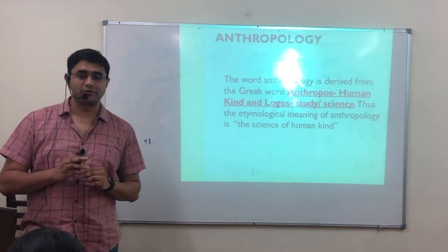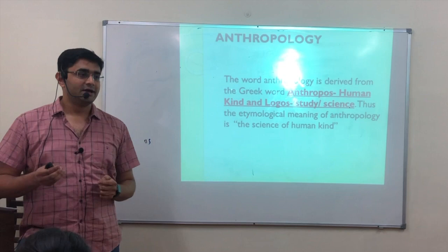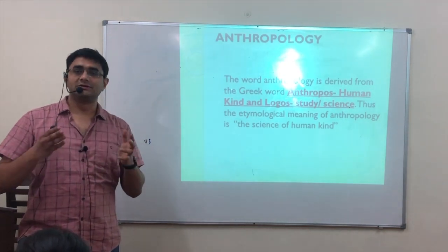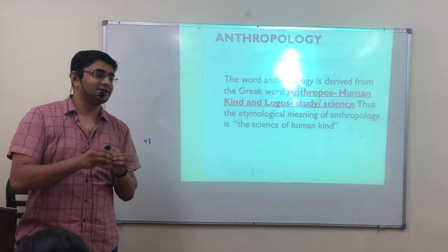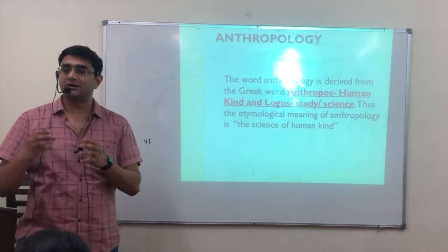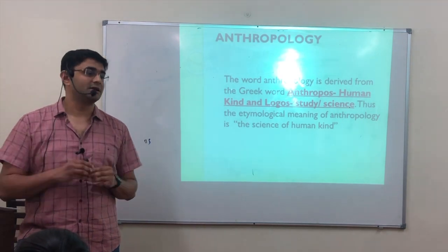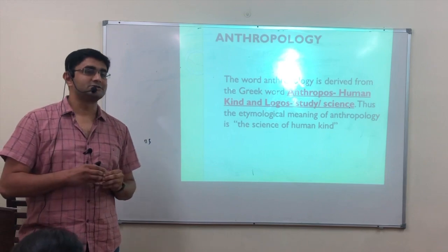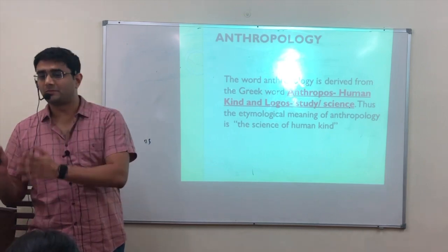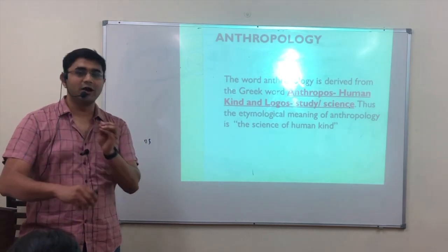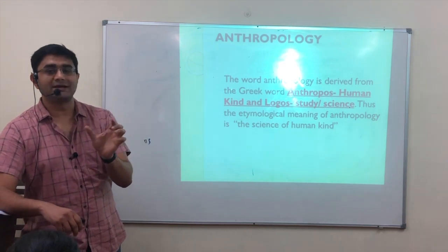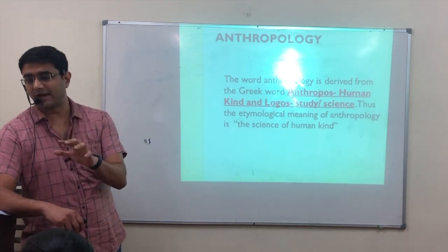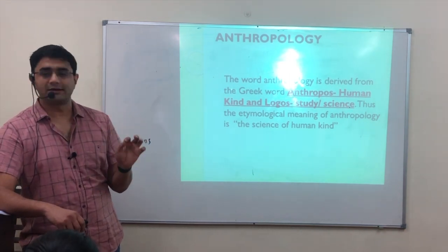It is a comprehensive study of humankind. If you take other disciplines — say economics, you study economic activity: production, distribution, consumption. History only talks about the historical and cultural evolution of mankind. Sociology studies human society. If you talk about medicine or any discipline, they are all part study of mankind. Whereas anthropology is a holistic science of man — it studies everything related to mankind.